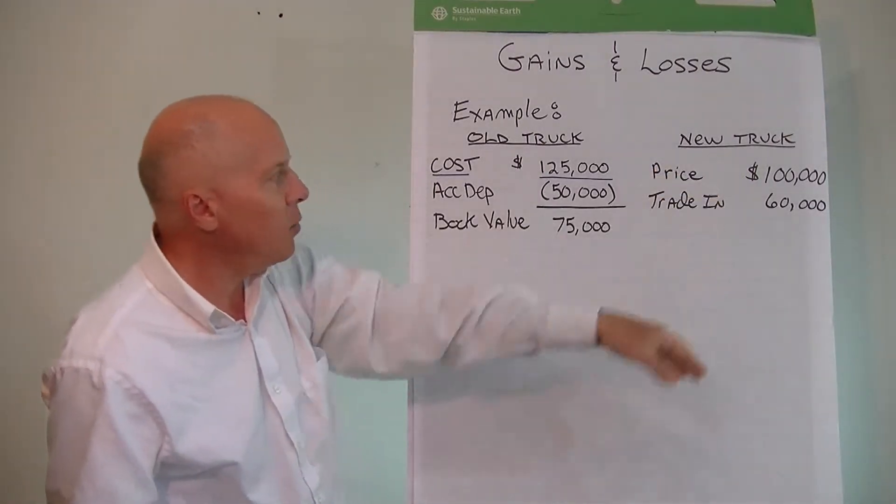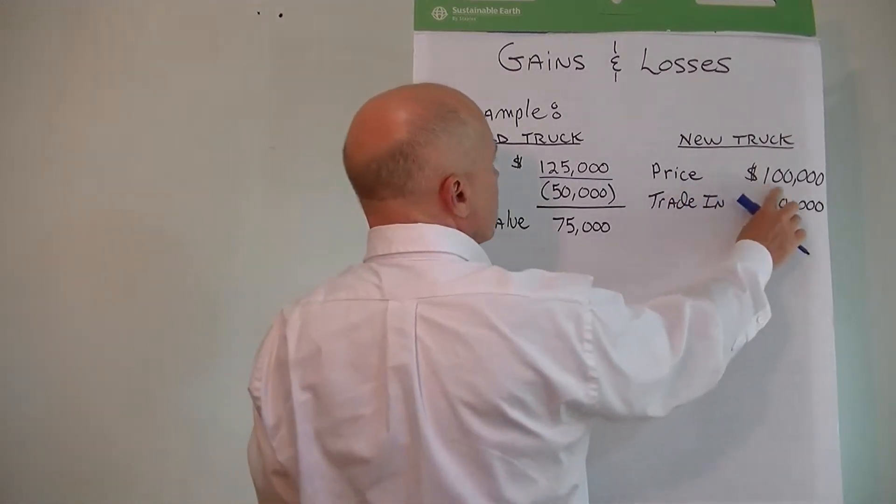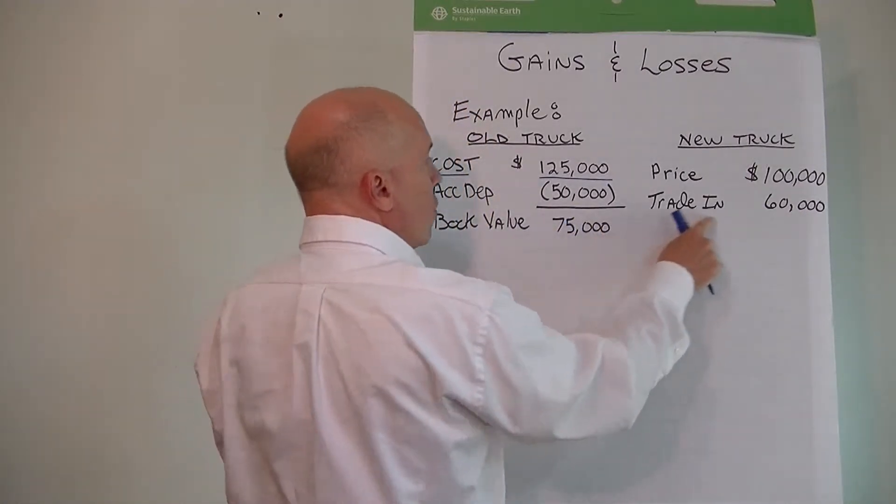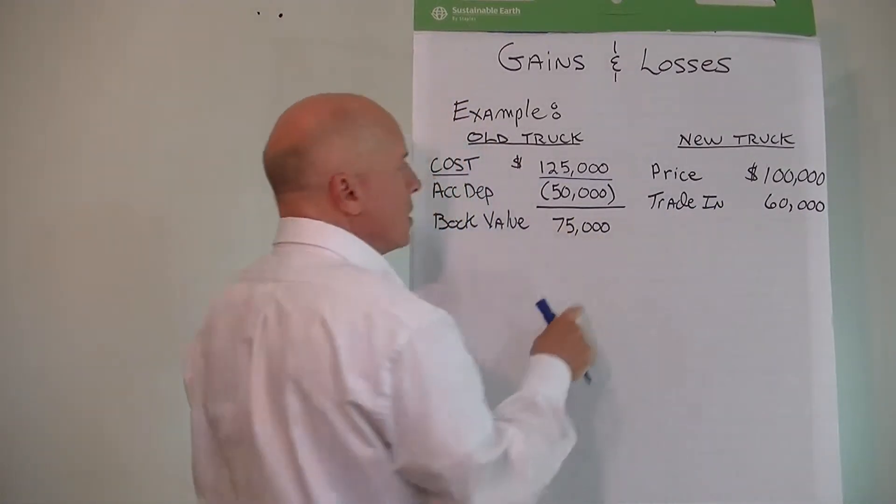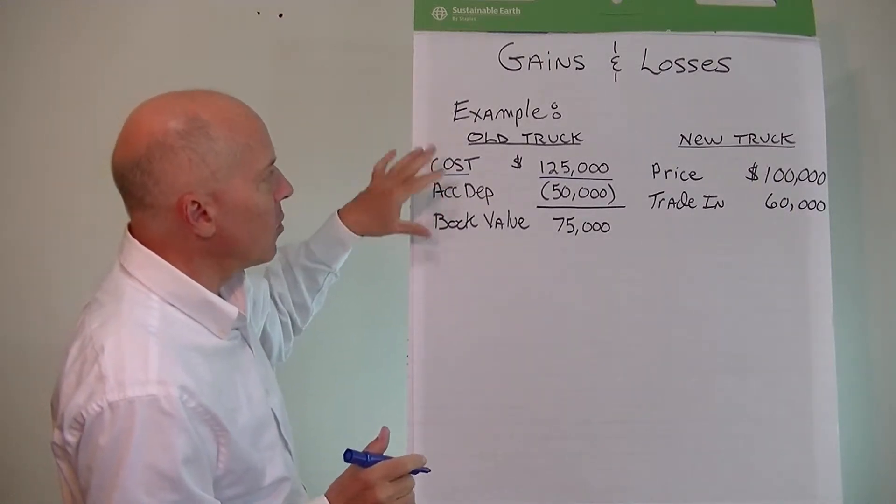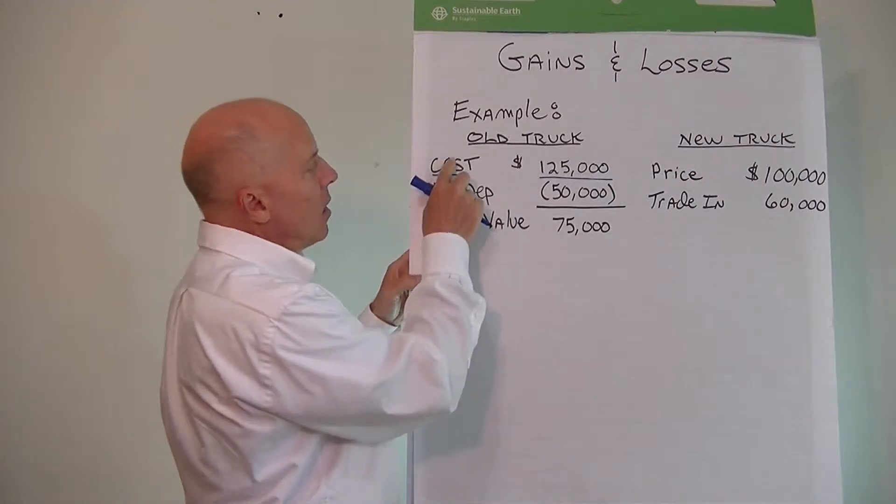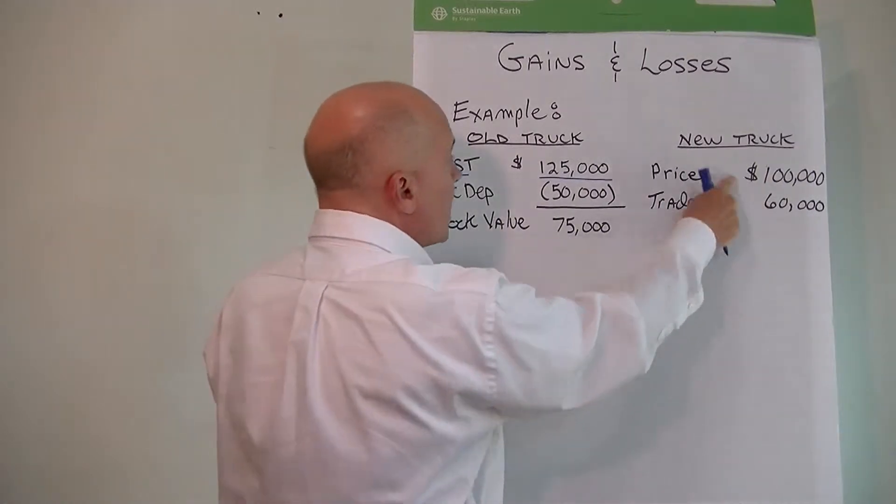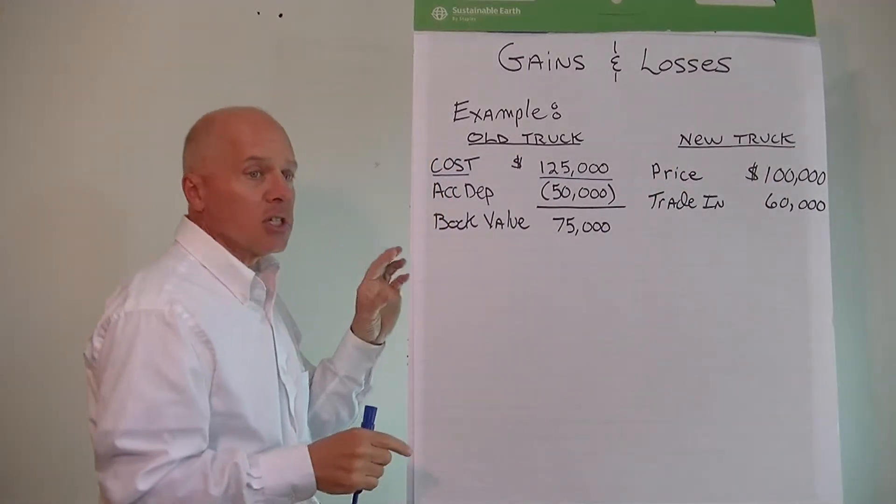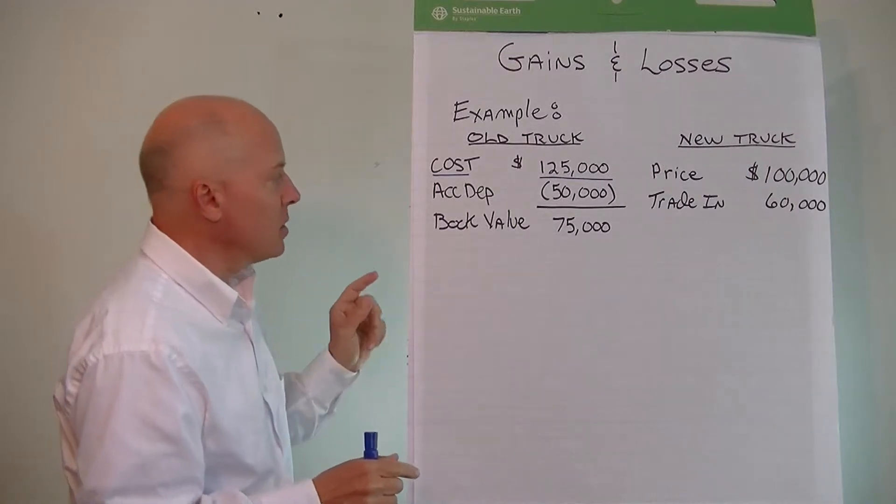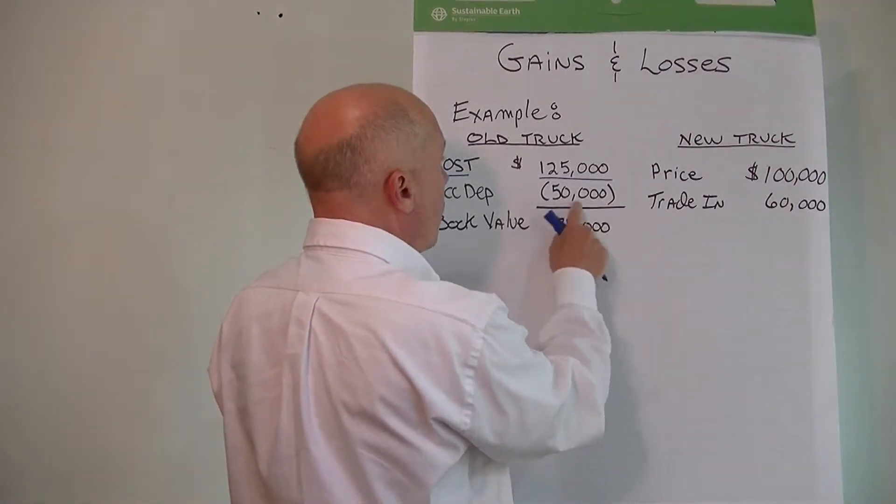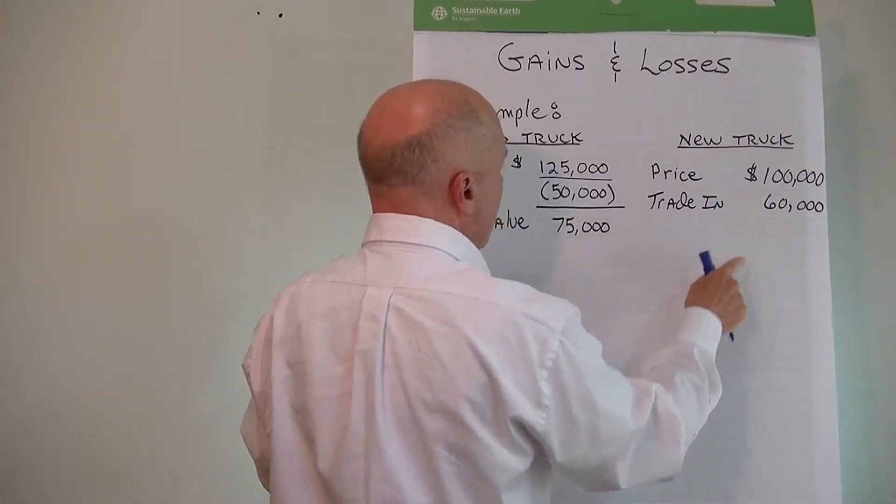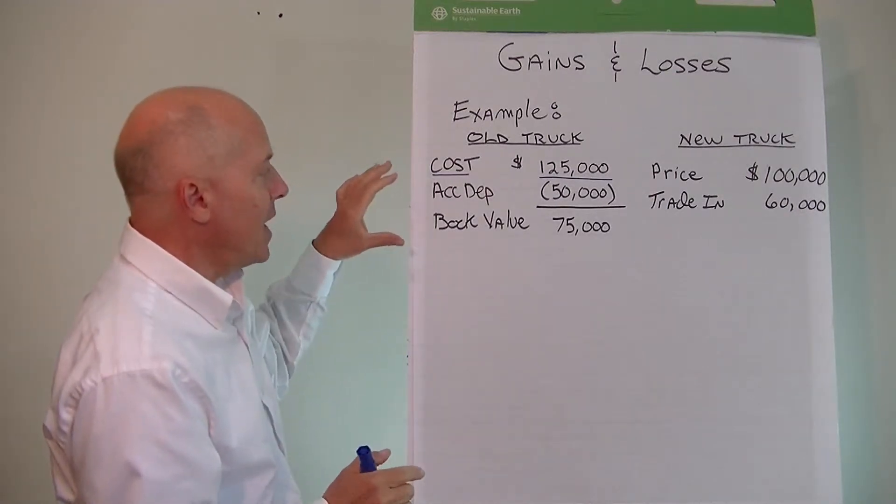Then we decide to trade it in and we have a new truck with a sales price of $100,000. The dealer will give us $60,000 for the old truck, less than what its book value is. What we're going to do is we're not going to recognize any gain or loss. We're simply going to clear out, zero out the old asset, and put the new asset on at an adjusted amount. We're going to take the book value of the old asset and add the difference between the sales price and the trade-in value, and record the new asset at that amount.